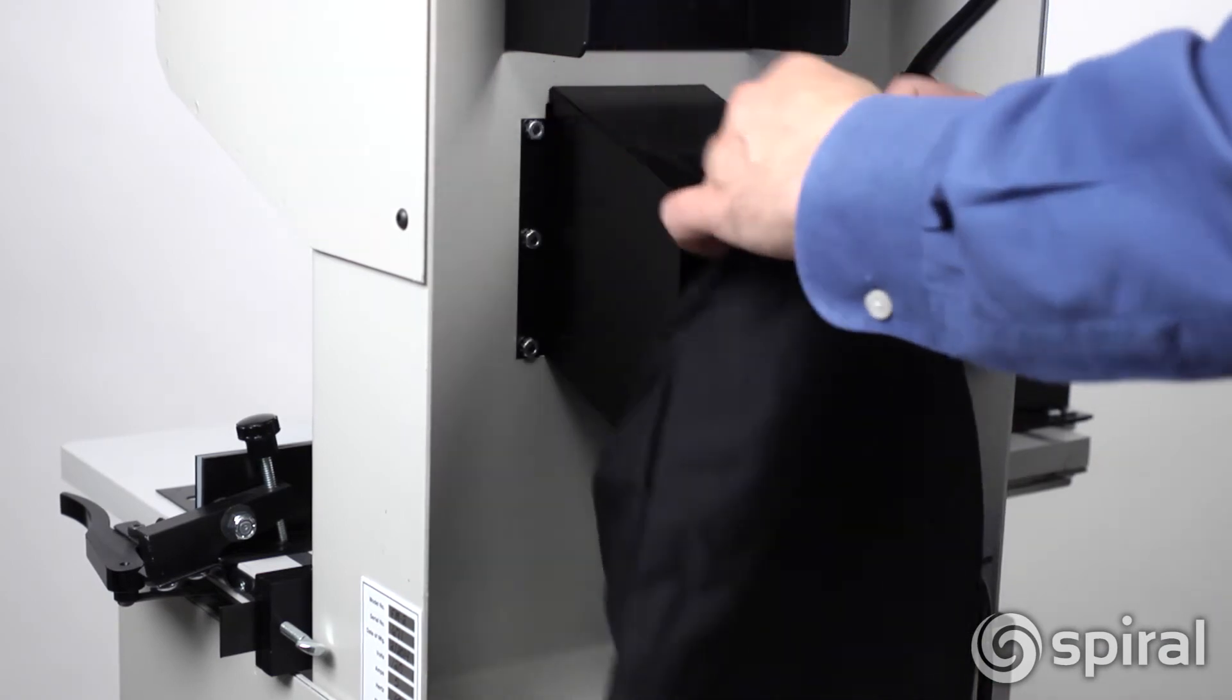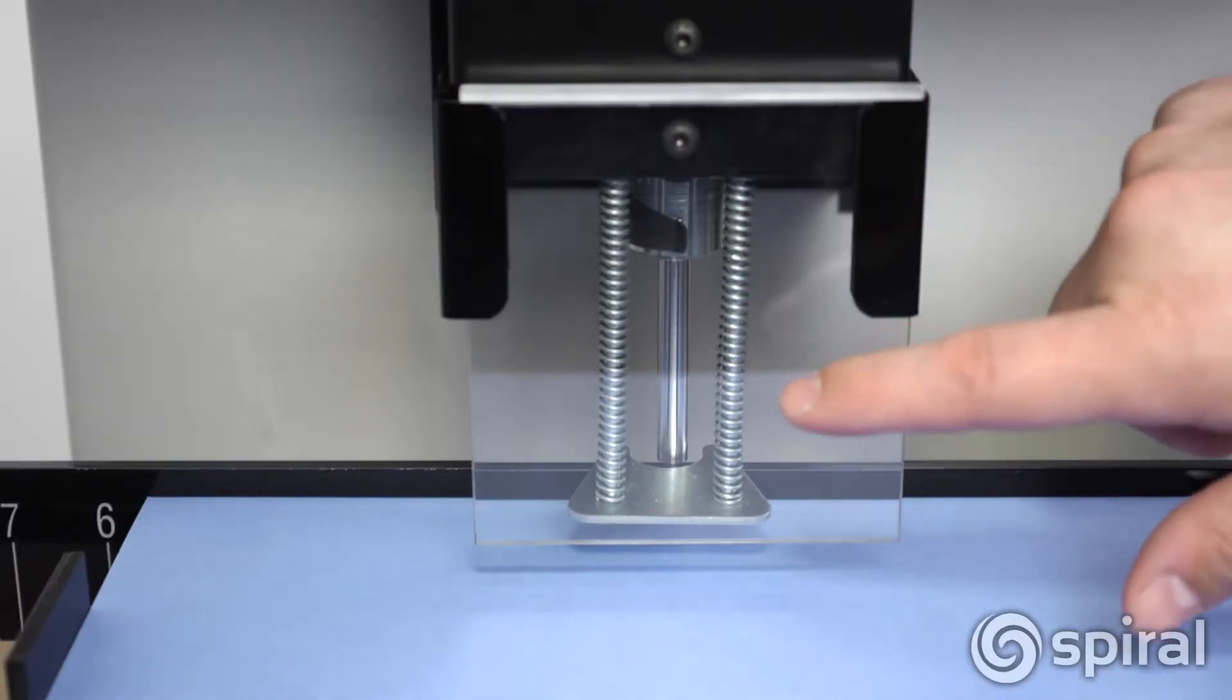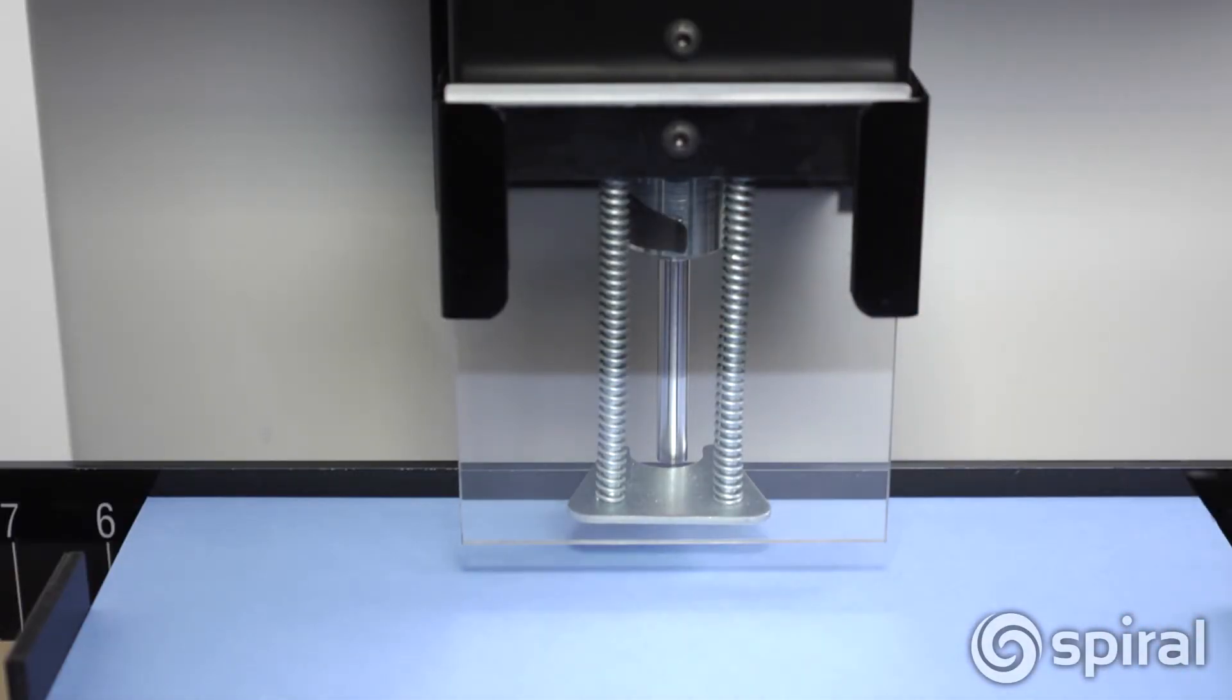Chads from the drilled paper are neatly caught in the waste bag for easy disposal. The machine has a clear plexiglass drill guard to provide operator safety.